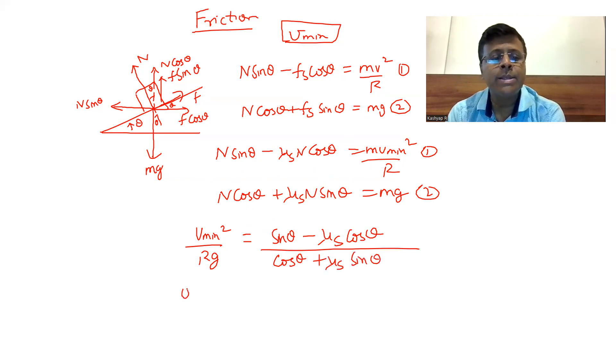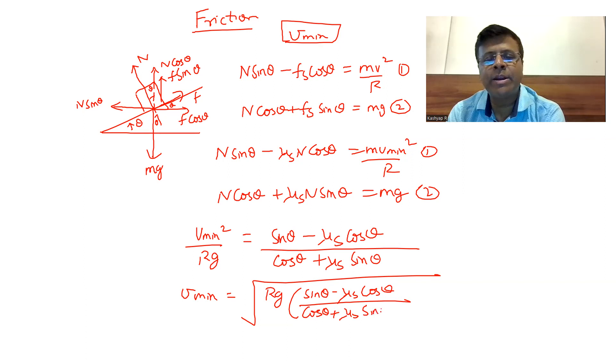This is the minimum velocity with which the car should go on a particular track so that it doesn't skid in the downward direction. Suppose the racer has decided to travel at a particular speed at a particular radius. If he decreases his speed below this value, he will skid in the downward direction. Skidding will happen.